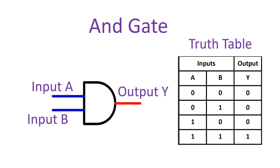Input A is 1, input B is 0, output is 0. Input A is 1, input B is 1, output is 1.